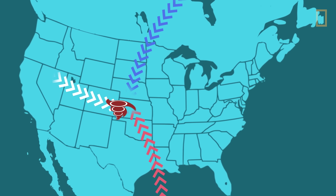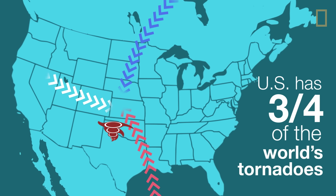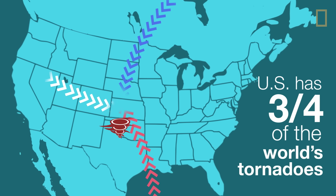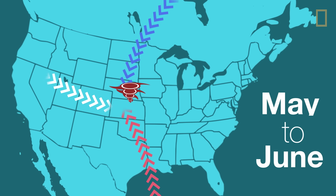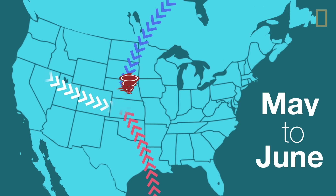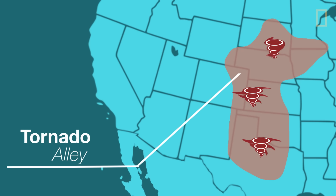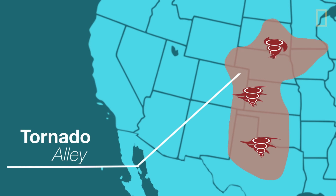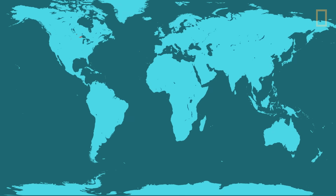Nearly three-quarters of the world's tornadoes occur in the United States, and the peak season is between May and June. A majority touch down in Tornado Alley, a section of the central United States. But tornadoes have been recorded in all 50 states and on every continent except Antarctica.